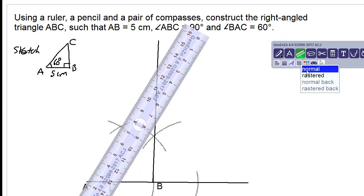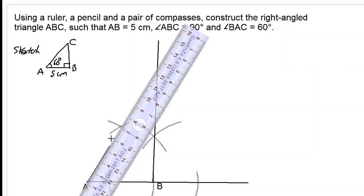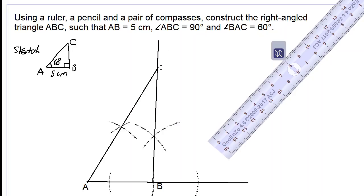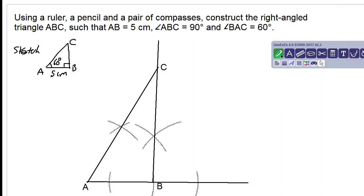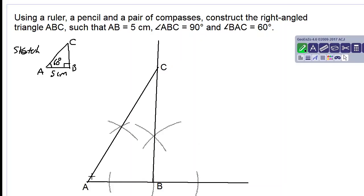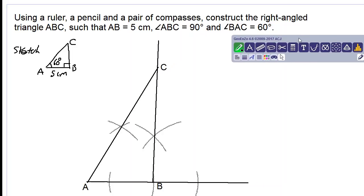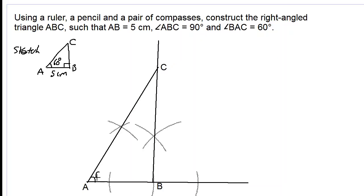Using our deeper pencil, we draw a line until it intersects the vertical line from B. This intersection is our point C. So we now have drawn our triangle. Angle BAC is 60 degrees and angle B is 90 degrees. We write in angle A as 60 degrees and angle B as 90 degrees, indicated by the little square.